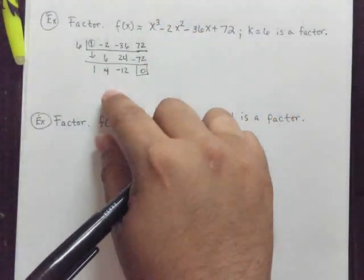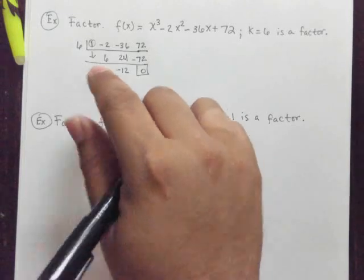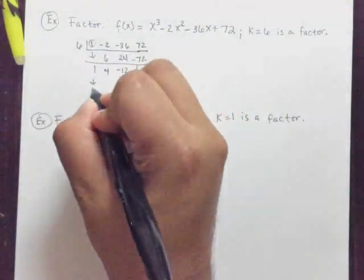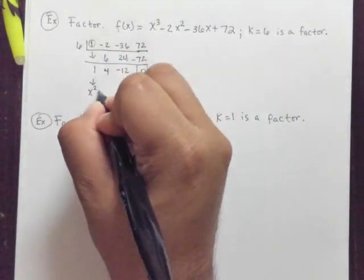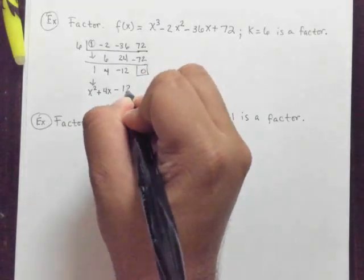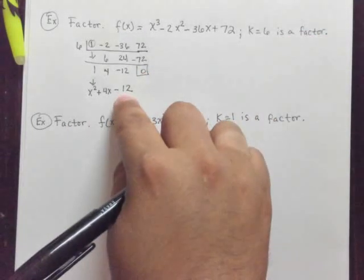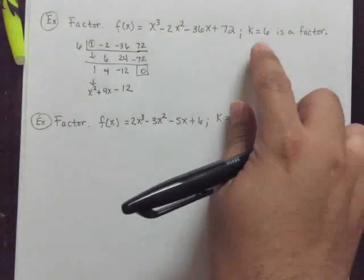And that's proven because this was supposed to be a factor. So let's take this, this is x squared plus 4x minus 12. This is the polynomial that we have left to factor. Let's go back over here.